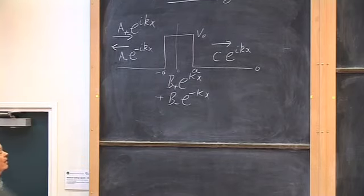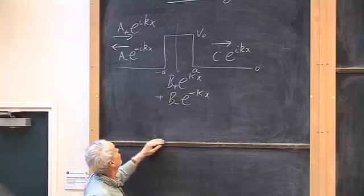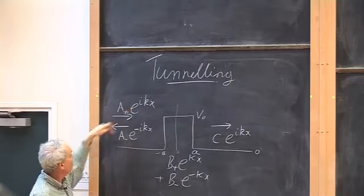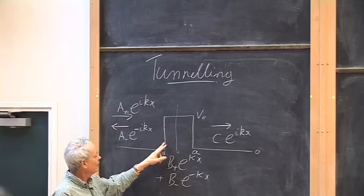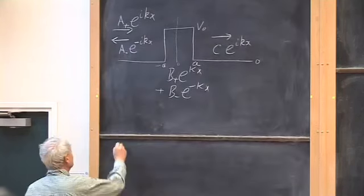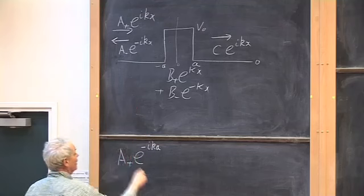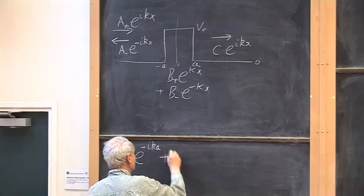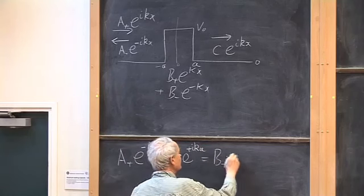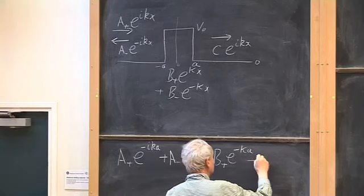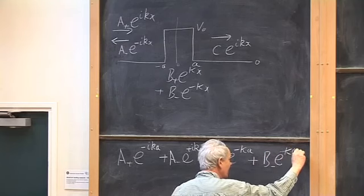Because we're dealing with a different physical situation it has implications for the maths. We have to impose continuity of the wave function. The wave function on the left — incoming wave plus reflected wave — must be continuous at the boundary x equals minus a. So we have: a-plus times e to the minus ika, plus a-minus times e to the plus ika, equals b-plus times e to the minus ka plus b-minus times e to the plus ka. And as ever, k equals the square root of 2m times energy over h-bar squared, and big K equals the square root of 2m(V0 minus E) over h-bar squared.